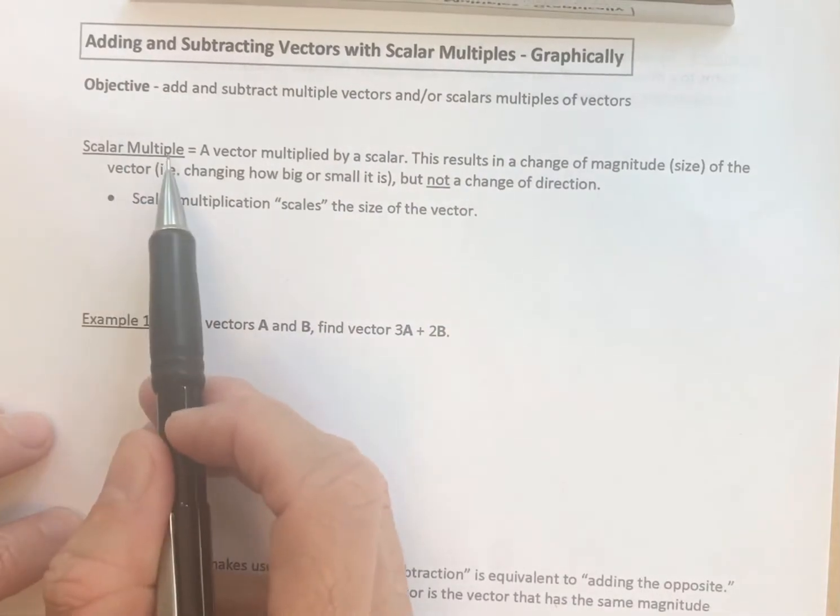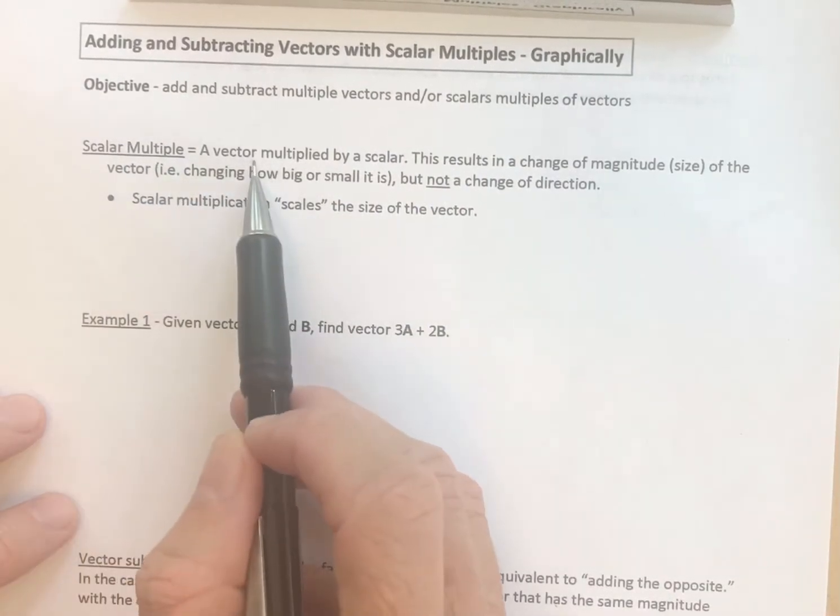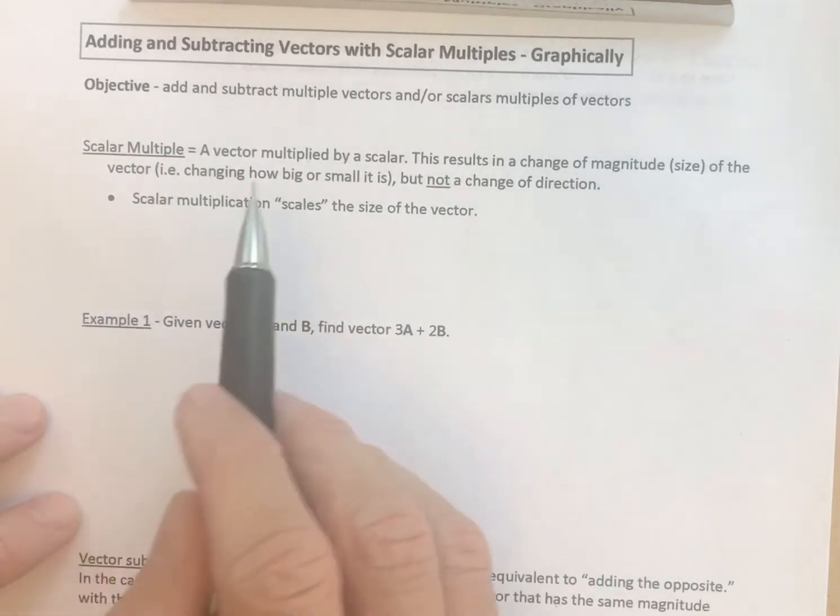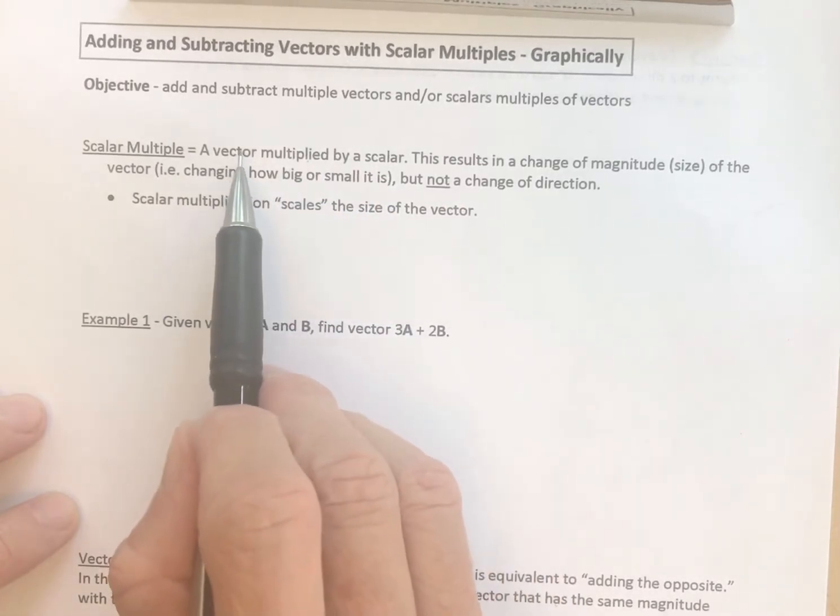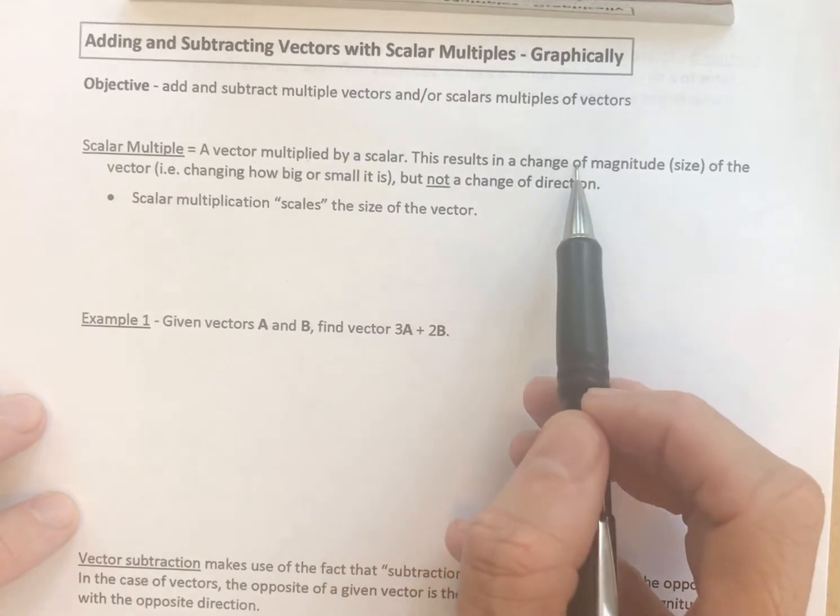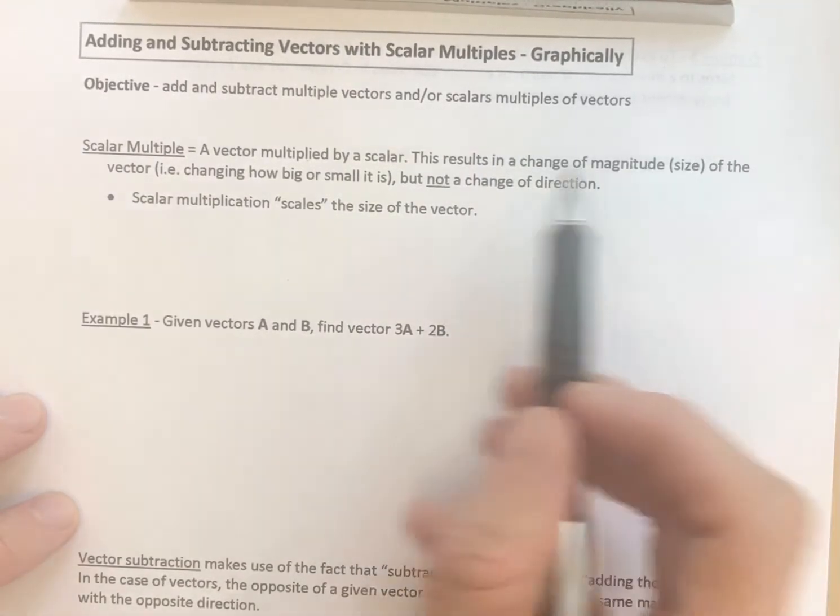First, let's define what a scalar multiple is. A scalar multiple is simply a vector multiplied by a scalar. When you take a number and multiply it by a vector, this results in a change of size or a change of magnitude of the vector.